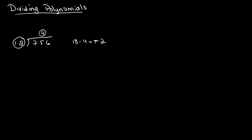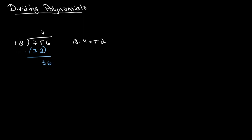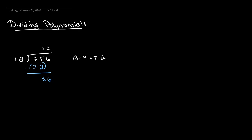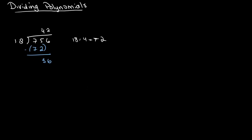So we multiply 4 by 18, which gives us 72. Then we subtract 72 from the number above, which gives us 3, and then we bring down the 6, giving us 36. Now we divide 36 by 18, which gives us 2. We multiply 2 by 18 to get 36, subtract, and this gives us a remainder of 0.